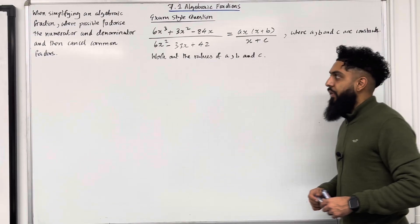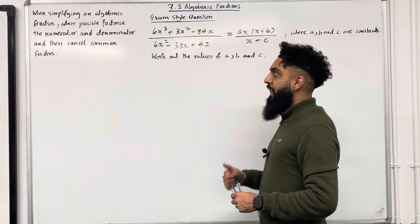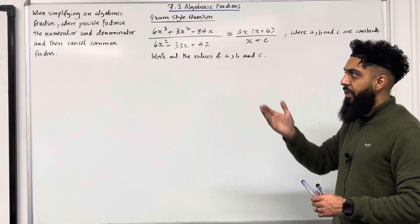Let's have a look at the key fact of this section. When simplifying an algebraic fraction, where possible, factorize the numerator and denominator and then cancel common factors.